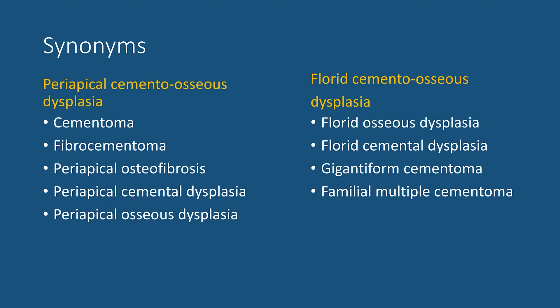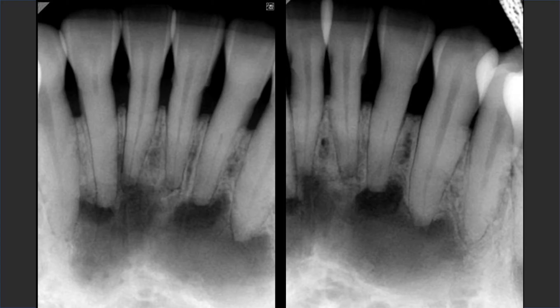In addition to the classification, this condition has had different names over the years, but these names have minimal consequence or impact on patient care. Currently the preferred names are periapical cementoosseous dysplasia and florid cementoosseous dysplasia. On our periapical radiographs we saw multiple radiolucent areas, probably continuous, around the apices of the mandibular incisors.